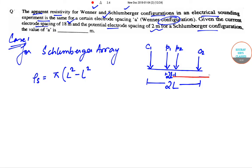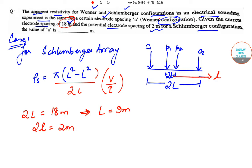This is equal to (L² - l²)/(2l) times V/I. Now 2L is given to be 18 meters, so L itself becomes 9 meters. And 2l is equal to 2 meters, which is given here, which makes l equal to 1 meter. So let us find the value of ρ_s.